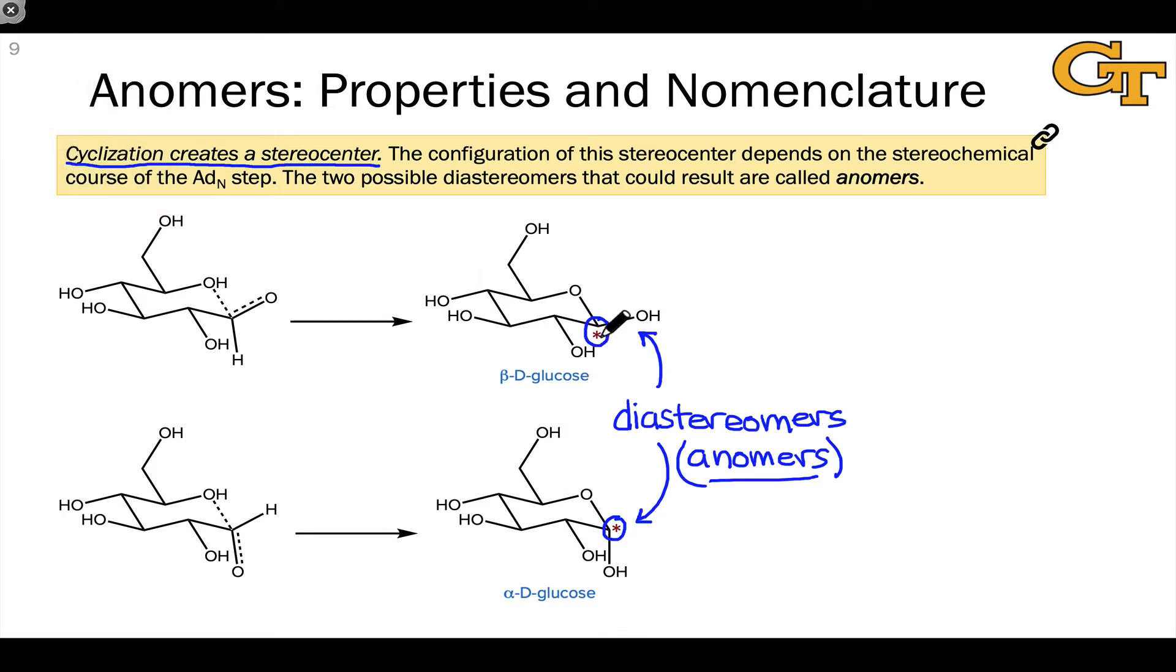We only need to think back to cyclohexane chairs and where substituents prefer to reside. Substituents tend to prefer to be equatorial rather than axial, and we see an equatorial hydroxyl group in beta-D-glucose and an axial hydroxyl group in alpha-D-glucose. For this reason, the beta anomer tends to be favored over the alpha anomer.